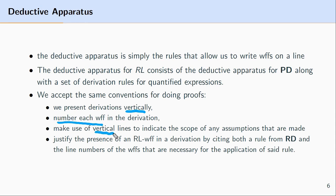We'll make use of vertical lines as well as indentation to indicate the scope of assumptions. We'll also explicitly indicate when we make use of a particular rule from the deductive apparatus — developing conventions for saying that a given line in the proof is there because of specific preceding lines and a particular derivation rule.